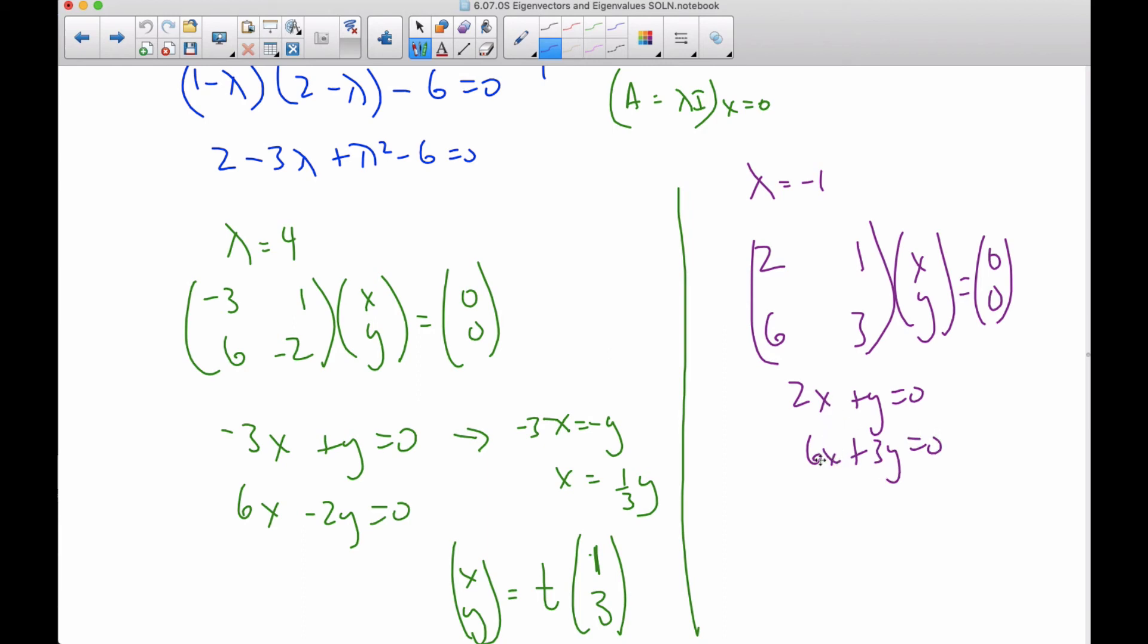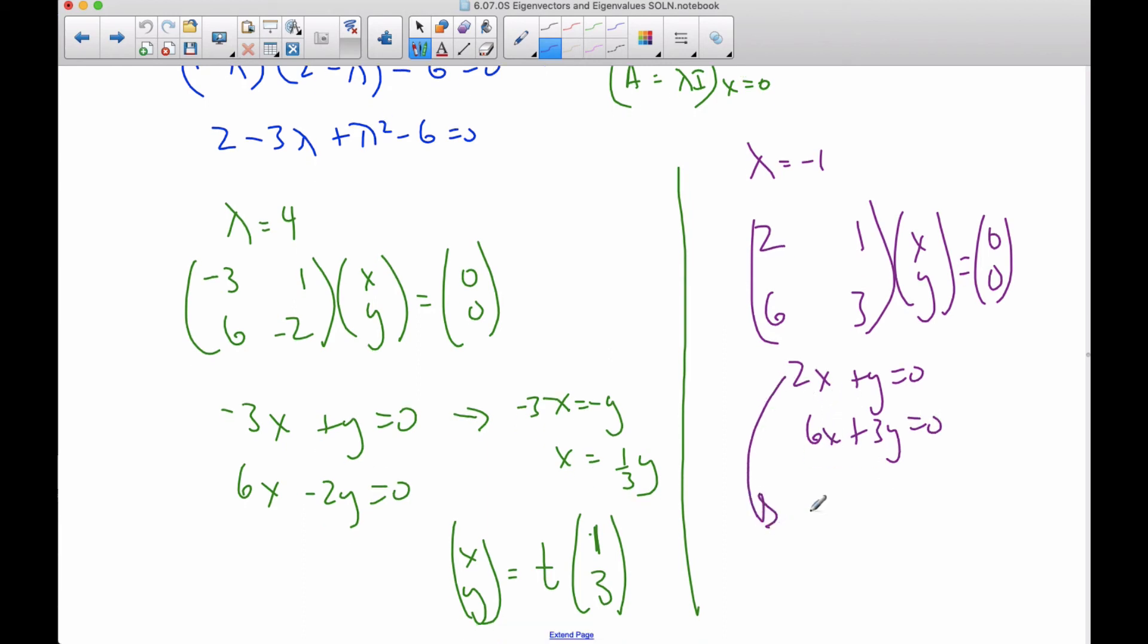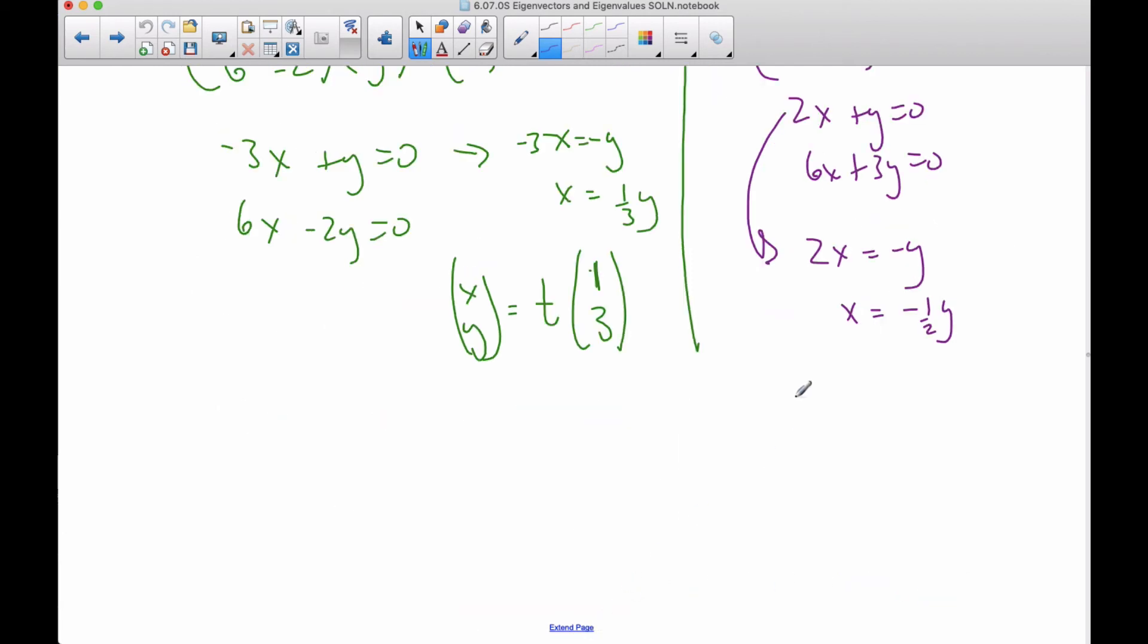Again, they're just multiples of each other. I can take this equation, and two X is equal to minus Y, X is equal to minus one half Y. And so again, I can make my eigenvector, I'm going to let Y be two, and so that makes X to be negative one. And so here is the eigenvector that is associated with the eigenvalue of negative one.